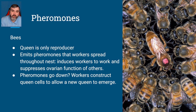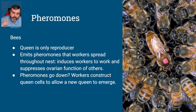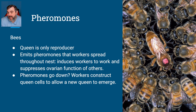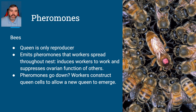Let's look at a few examples. In bees, the queen is the only reproducer. She emits pheromones that workers spread throughout the nest, which suppresses the ovaries of the worker bees — and remember, most bees are actually female. It also induces the workers to work. If the pheromone levels go down, we know the queen is in decline — maybe she died or was removed. The workers will then change behavior, construct a queen cell, and allow a new queen to emerge. So what type of pheromone is that? It's priming — that's a priming pheromone.